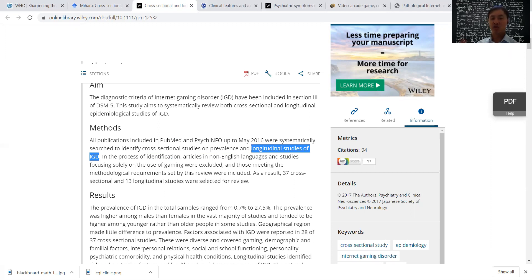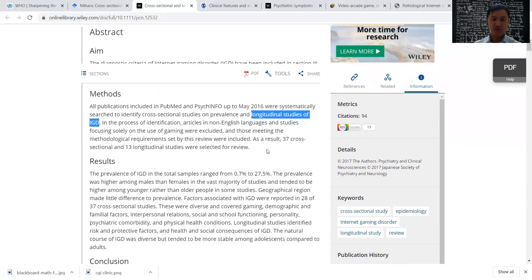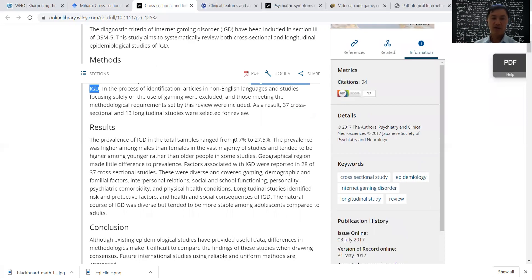So what do I mean by cross-sectional studies? Cross-sectional is one point in time they looked at a population and look for how many people at that particular point in time in that group had internet gaming disorder. Longitudinal studies, however, are looking at different time points. So more than one time point, maybe one year, two years, three years. They looked at articles from different languages. So non English articles. And those studies looking at just gaming were excluded. And as a result, 37 cross-sectional and 13 longitudinal studies were selected. So 50 studies were looked at. And they found out that they reported 0.7 to 27%. So there's a big range of difference there.